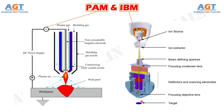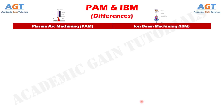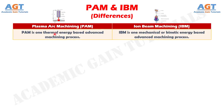Let's look into the basic differences between plasma arc machining and iron beam machining in a tabular form. Difference number 1: plasma arc machining is one thermal energy based advanced machining process, whereas iron beam machining is one mechanical or kinetic energy based advanced machining process.